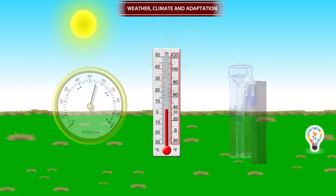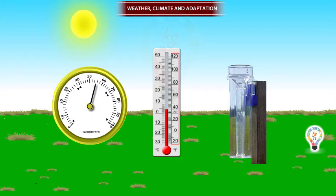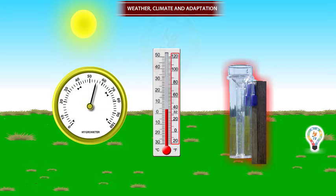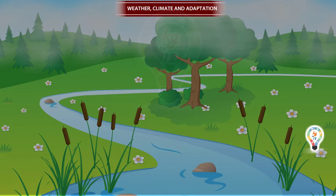The second element of weather is humidity and rainfall. Humidity is measured by an instrument called hygrometer. Rainfall is measured by an instrument called rain gauge. In India, rain is mainly brought by two kinds of humidity-laden winds.